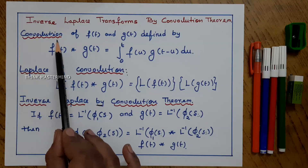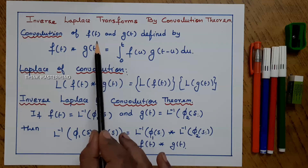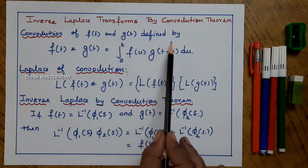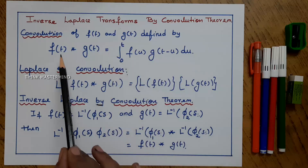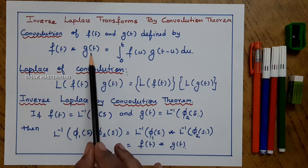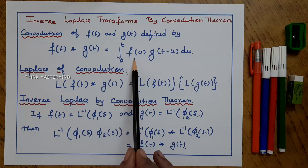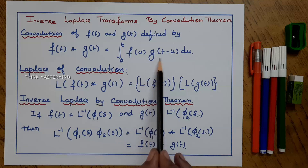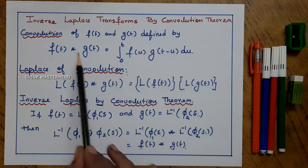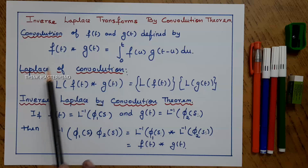We are going to see what is the convolution. Convolution of two functions f(t) and g(t) is defined by f(t) * g(t) is equal to the integral from 0 to t of f(u) g(t minus u) du. Here, the star represents the convolution operator.